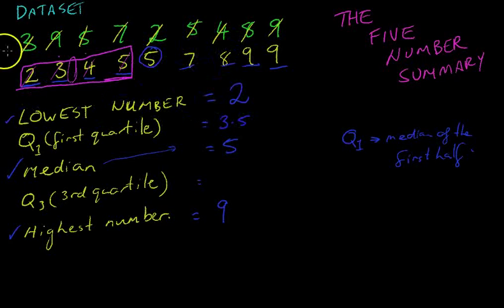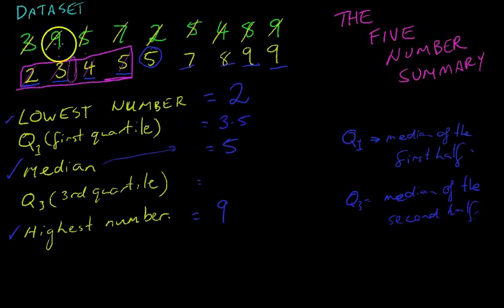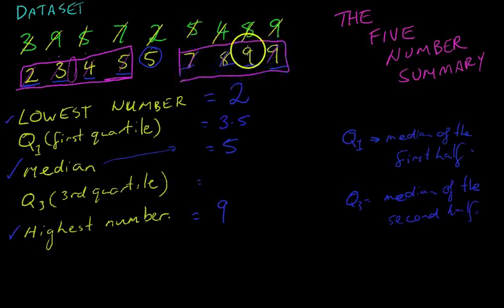And our third quartile — you can probably guess — it's the median of the second half. So here's our second half. Working into the middle, we get 8 plus 9 divided by 2, which is 8.5.